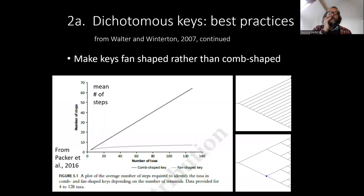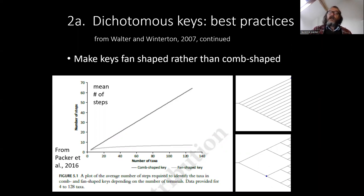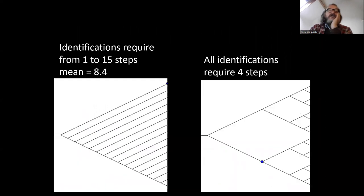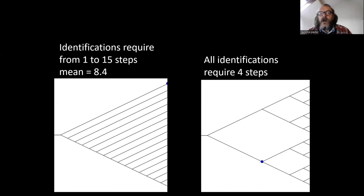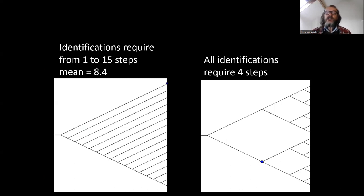Dichotomous key best practices: make them fan-shaped, as in the bottom right example, rather than cone-shaped as in the top right. The average number of steps to get from the first couplet to an identification increases linearly in cone-shaped keys, but very slowly in fan-shaped keys. For 16 taxa, identification in a cone-shaped key requires 1 to 15 steps for an average of nearly 8.5, whereas in the fan-shaped key all identifications require just 4 steps — a lot easier for the user and more efficient in terms of time. Add 16 species to the fan-shaped key and you'll get to 5 steps; add 16 to the cone-shaped and the number of steps goes up substantially.